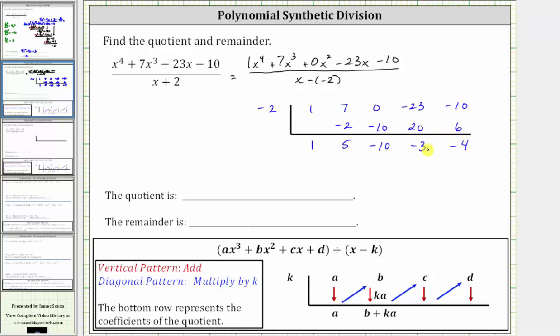This last row indicates the quotient and the remainder. Starting from the right, we have the remainder, the constant term, the coefficient of the x term, the coefficient of the x squared term, and the coefficient of the x cubed term.